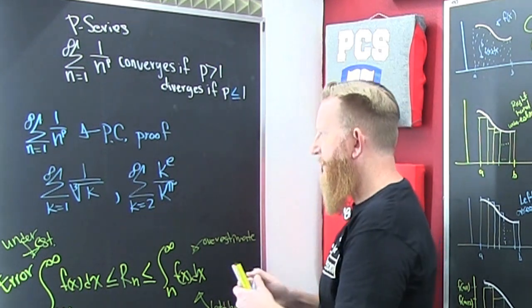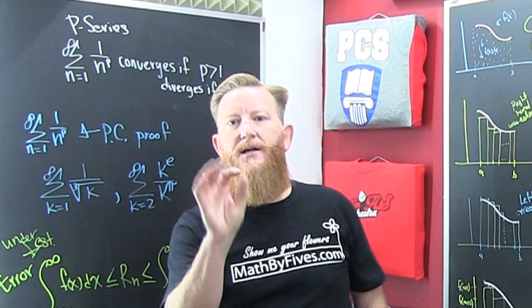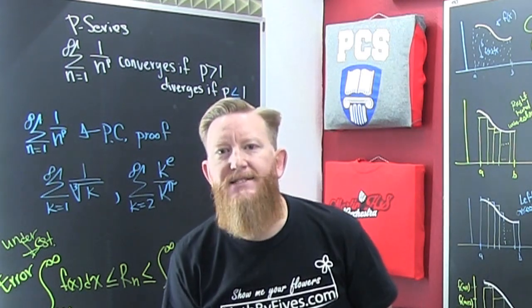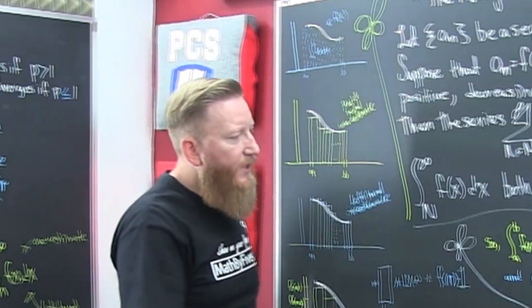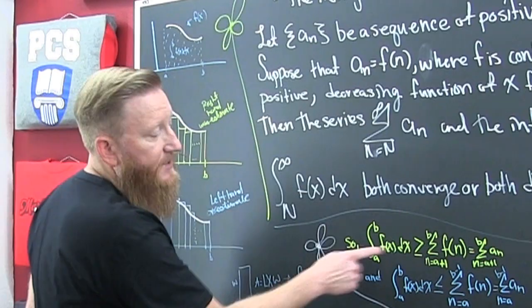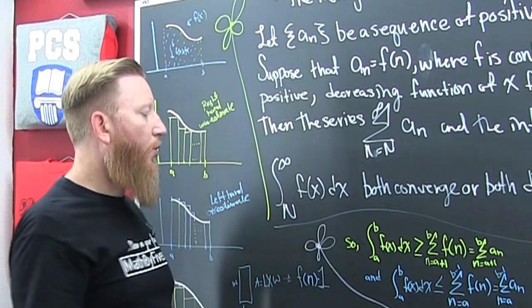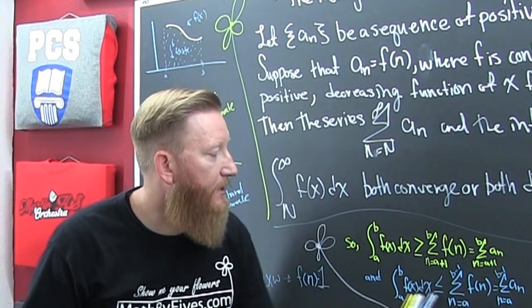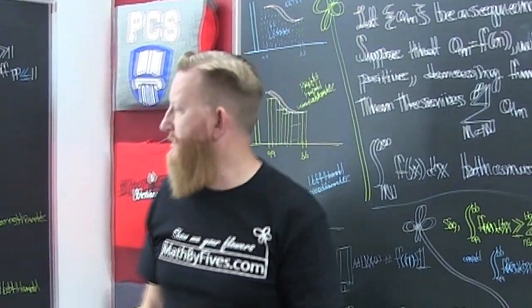One last mention has to do with the error on the estimate. We said the integral is bigger than the series, or the series is smaller than the integral — but by how much exactly? That's the error bound question.